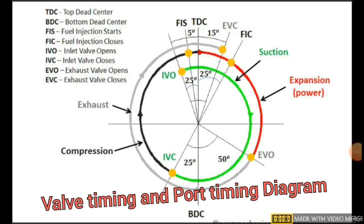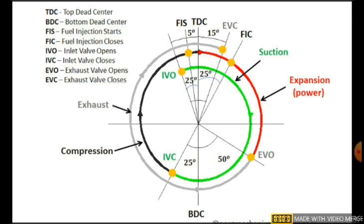Hello everyone. We are looking at the valve timing diagram for a four-stroke diesel engine. The aim of this experiment is to draw the valve timing diagram. To perform this experiment, you need a single cylinder cut section of a four-stroke diesel engine. In this diagram you can see the different events — there are two types of valves: the inlet valve and the exhaust valve, giving four events: inlet valve opening, inlet valve closing, exhaust valve opening, and exhaust valve closing.